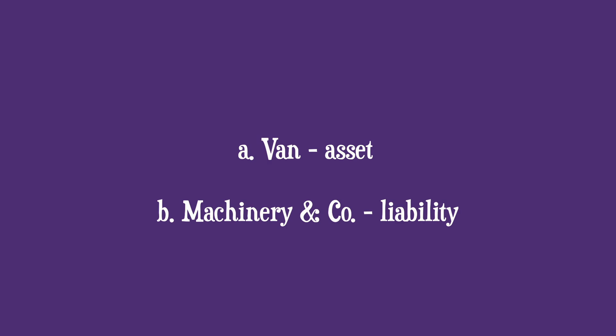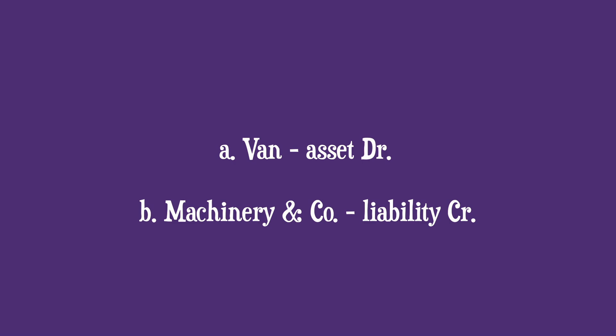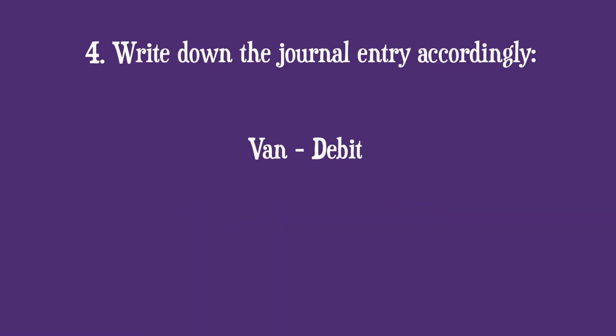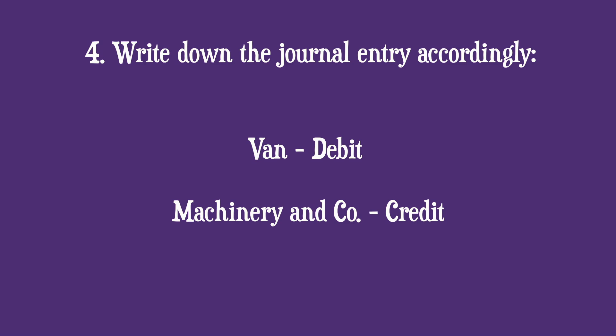The third step is to find out whether each item is increasing or decreasing. The van is coming to us — we're acquiring it — so the asset is increasing. When assets increase, PEA tells us they are debited. So the van is debited. Machinery & Co is our liability, and it is also increasing. When liabilities increase, RLS tells us they are credited. So Machinery & Co is credited.